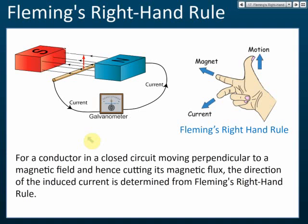That's how we use Fleming's right-hand rule to determine the direction of the current. For a conductor in a closed circuit moving perpendicular to a magnetic field and cutting its magnetic flux, the direction of the induced current is determined from Fleming's right-hand rule.